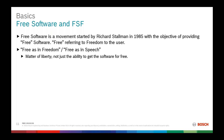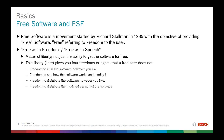The Free Software Foundation defines four freedoms: first, freedom to run the software however you like; second, freedom to see how the software works and modify it — the source code should be made available and any user should be able to view and modify it; third, freedom to distribute the software however you like, such as via email or a public cloud link; and fourth, freedom to distribute the modified version of the software.